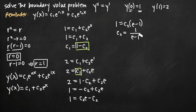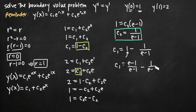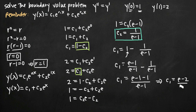Now we have a value for c₂, which is 1/(e minus 1). We already have the formula c₁ = 1 minus c₂, so we plug in: c₁ = 1 minus 1/(e minus 1). Finding the common denominator (e minus 1), we multiply 1 by (e minus 1)/(e minus 1) to get c₁ = (e minus 1 minus 1)/(e minus 1), which simplifies to c₁ = (e minus 2)/(e minus 1).